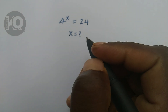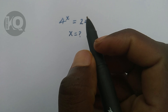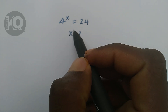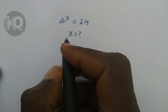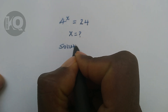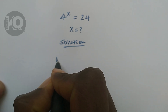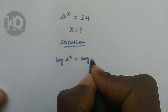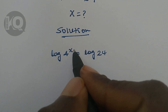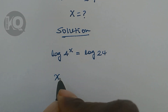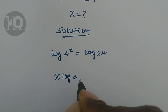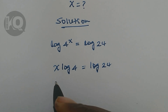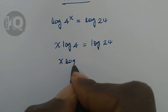Welcome. Solve this math problem: 4 to the power of X is equal to 24. To find the value of X, in the first step we have to introduce logarithm on both sides. So log of 4 to the power of X equals log of 24. This X will come down to the front, giving us X times log of 4 equals log of 24.